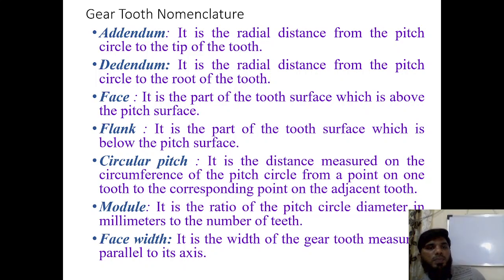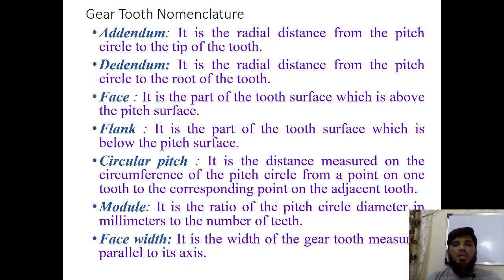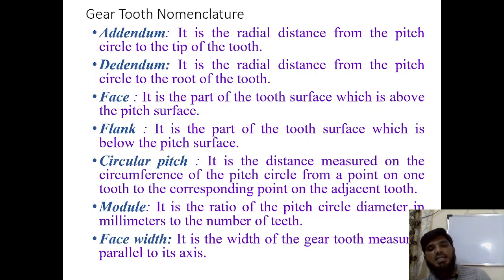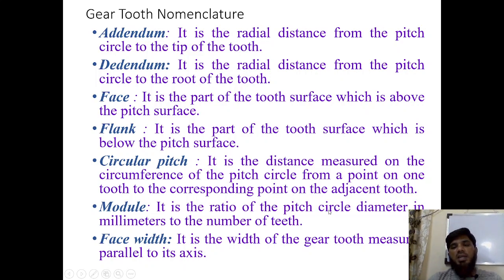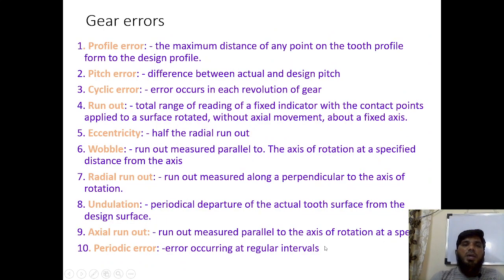The dedendum is the radial distance from the pitch circle to the base of the tooth. The face is the part of the tooth surface above the pitch circle; the flank is the part below. Circular pitch is the distance measured on the circumference of the pitch circle from a point on one tooth to the corresponding point on the adjacent tooth. Module is the ratio of pitch circle diameter to number of teeth (m = PCD/n). Face width is the width of the gear tooth measured parallel to the axis.